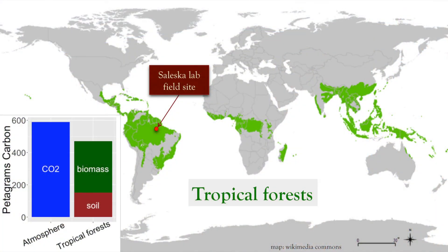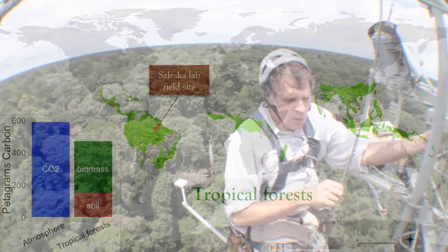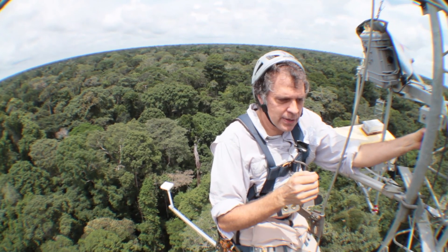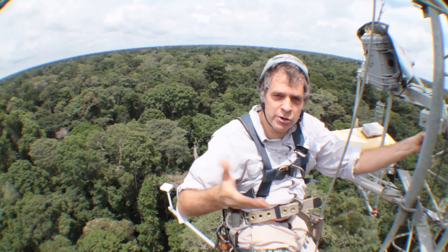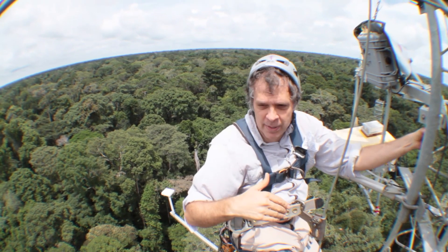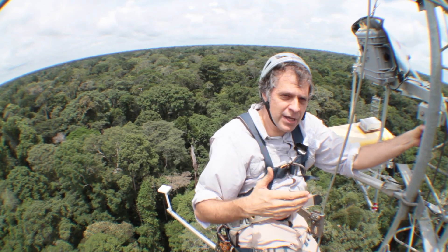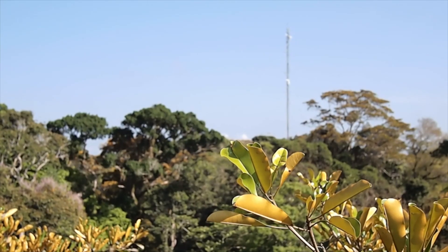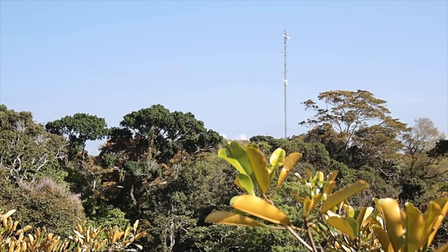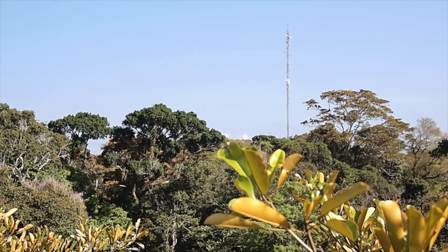Two biomes, in particular, contain more than half of the biological carbon, and one of those two biomes is tropical forests, just like this one. One of the big problems, however, in understanding how forests influence climate and are in turn themselves influenced by climate, is the problem of biological scaling — scaling from organisms or even organs of organisms up to the ecosystem level, which is important for climate.